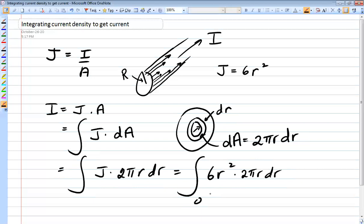And we would integrate from 0 to the edge of the wire, capital R. So this becomes 12 pi r dr. And integrates r to the 4 over 4 from 0 to r.